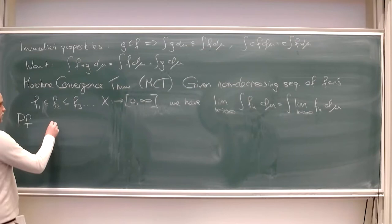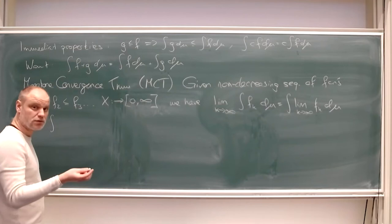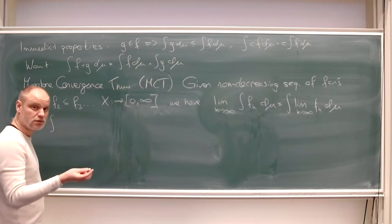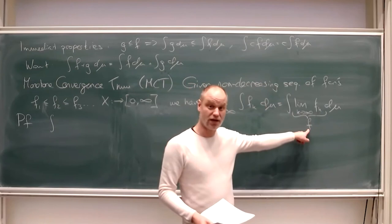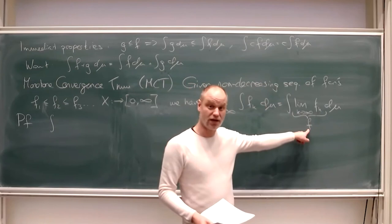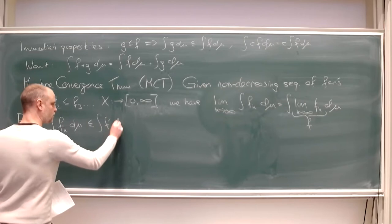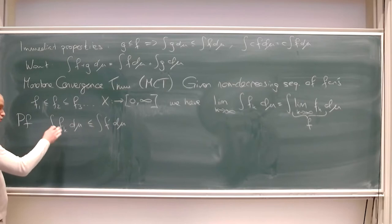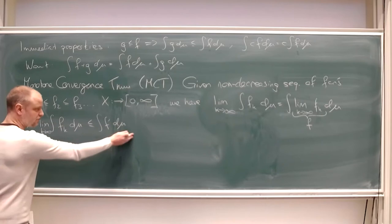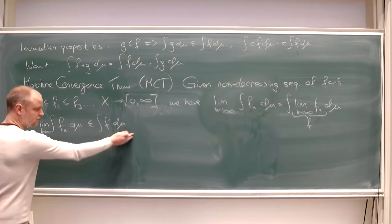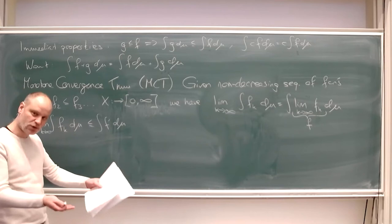For the easy direction: let f denote the pointwise limit. Since each f_k ≤ f, the integral of f_k ≤ integral of f. Since this holds for all k, we can put a limit on the left and still preserve the inequality. If the right side is a fixed number bigger than all these numbers, it's also ≥ the limit.